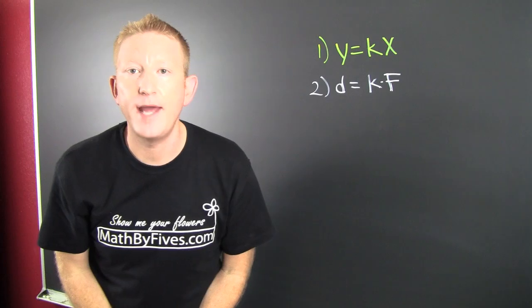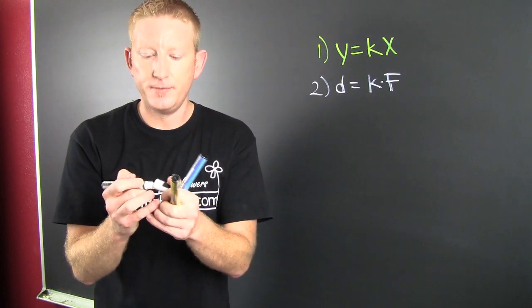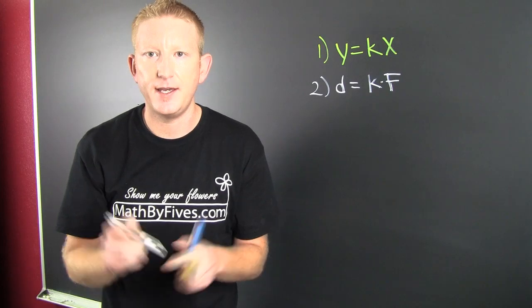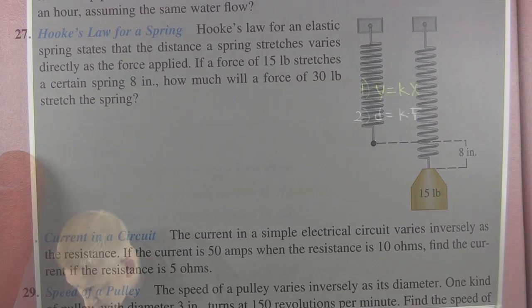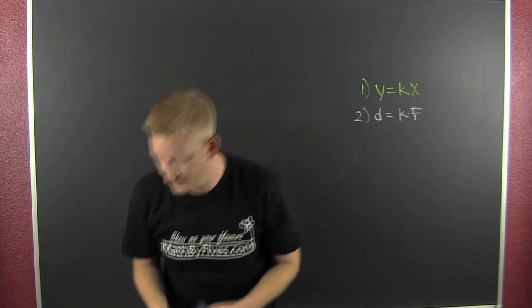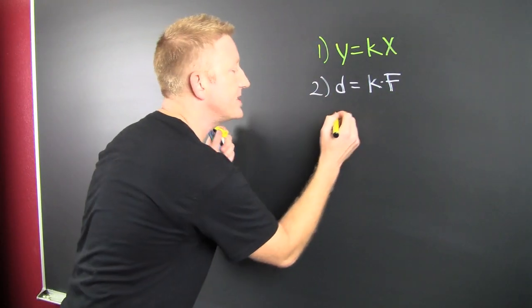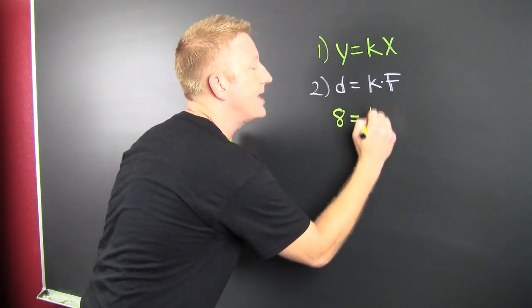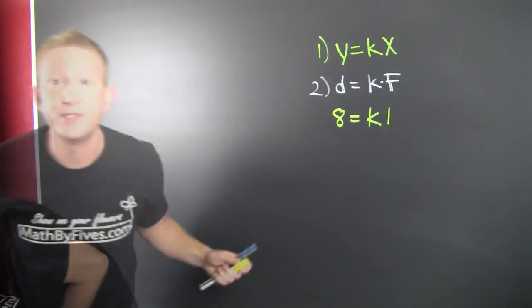In the second sentence, before the comma, they give you the values to find K. It says if a force of 15 pounds stretches a spring eight inches — let's use that to find K. The force is 15 and the distance is 8.